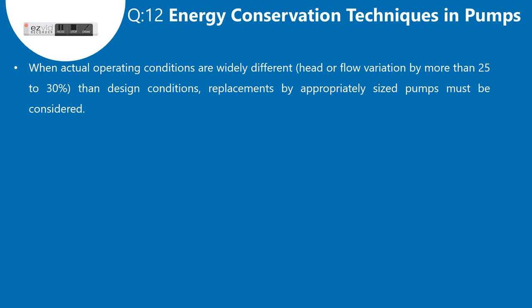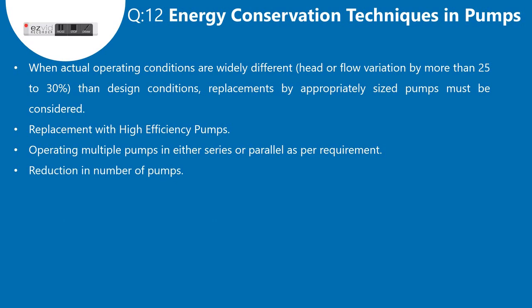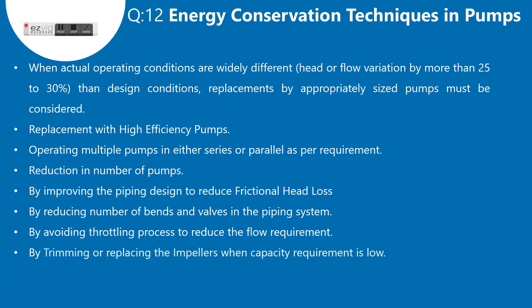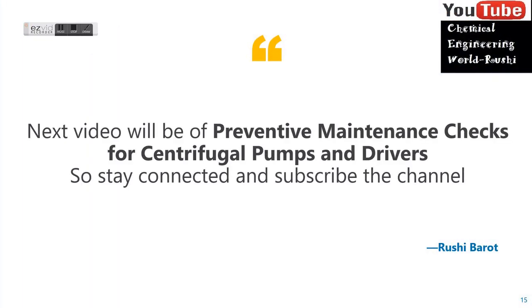Question 12: Energy conservation techniques in pumps. When actual operating conditions are widely different — head or flow variation by more than 25 to 30 percent from design conditions — replacement by appropriately sized pumps must be considered. Other techniques include: replacement with high efficiency pumps; operating multiple pumps in series or parallel as per requirement; reduction in number of pumps; improving piping design to reduce frictional head loss; reducing number of bends and valves; avoiding throttling to reduce flow; trimming or replacing impellers when capacity requirement is low; using variable speed drives; and using energy efficient motors.